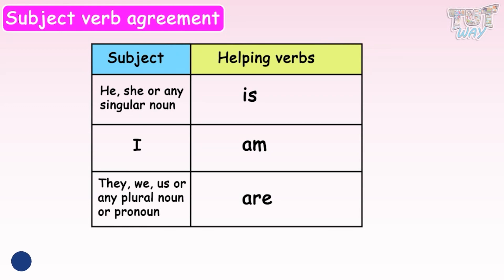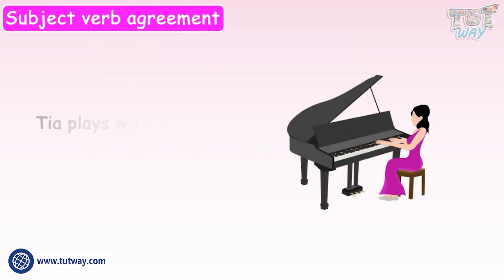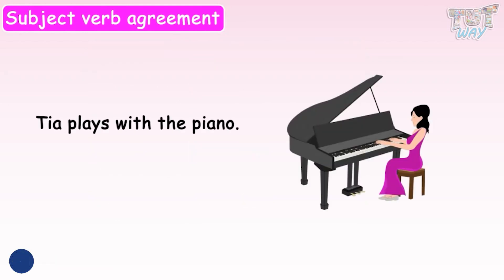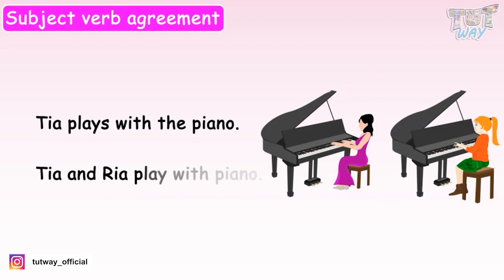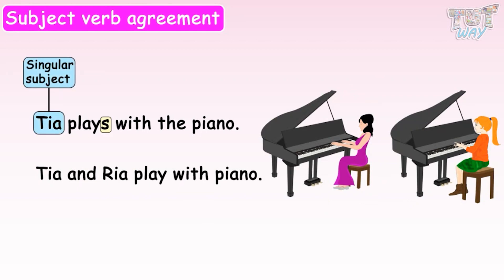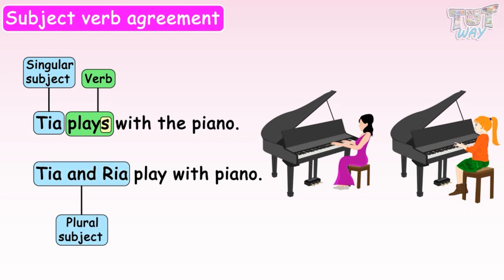Now let's learn about the verbs. Tia plays with the piano. Tia and Ria play with the piano. When the subject is singular, that is Tia, we add 'S' after the verb — Tia plays. And when the subject is plural, that is Tia and Ria, we do not add 'S' after the verb. So in all sentences, the subject and the verb must agree with each other.